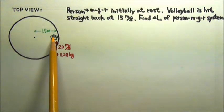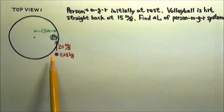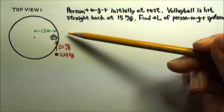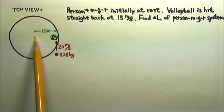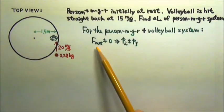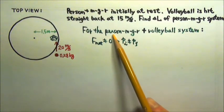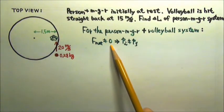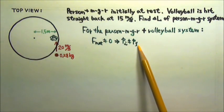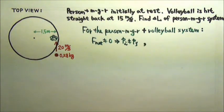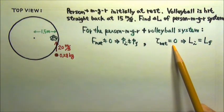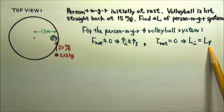This collision between the person's merry-go-round system and the volleyball involves a fixed axle. When the person hits the volleyball, there must be a jolt at the axle. So the net force on the person's merry-go-round plus the volleyball system is not zero, and therefore the momentum is not conserved. However, whatever extra force at the axle would provide no torque, so the net torque is zero and the angular momentum is conserved.